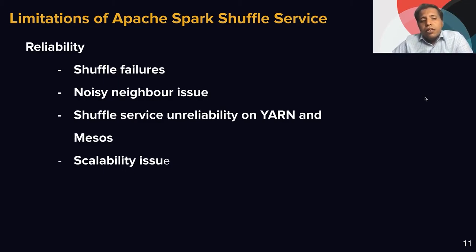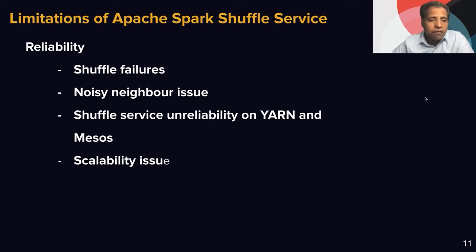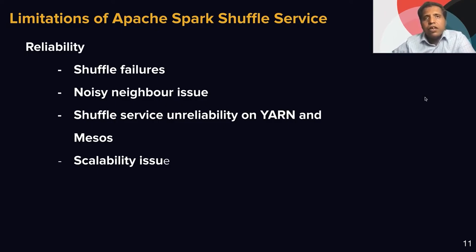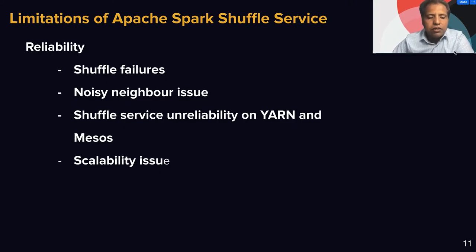One of the main issues is scalability. We have use cases that need to write more data to disk than we have available. For example, if we need to write more than one terabyte of data on a machine for the shuffle, those are legitimate use cases, but we can't run those jobs in Spark because the shuffle service becomes a bottleneck. These are the reliability and scalability challenges we see in our production system.